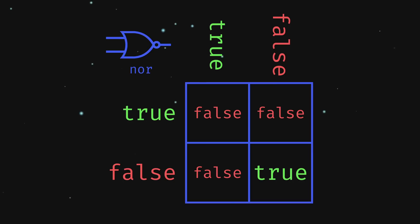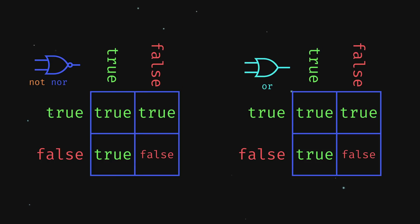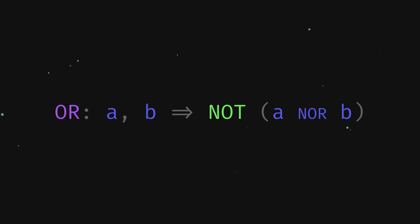Next up, since NOR returns true only if both inputs are false, then the complete opposite gate would return false only if both inputs are false. This truth table looks eerily similar to the OR gate, so we can define OR as being not the quantity a NOR b.